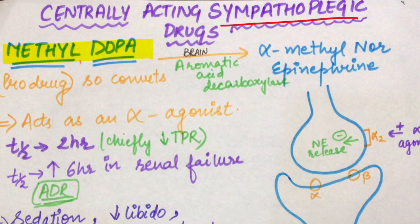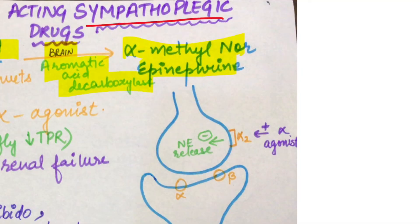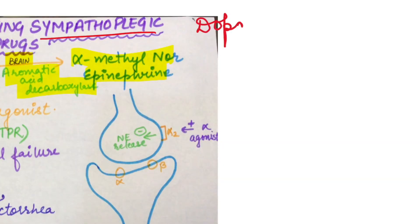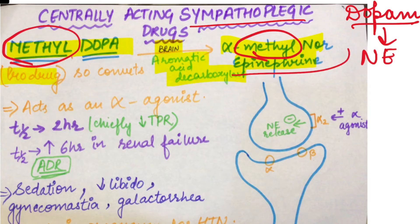Methyl dopa is a pro-drug, meaning we have to activate it into an active form in the brain. In the brain there is an enzyme called aromatic acid decarboxylase. This enzyme converts methyl dopa into alpha methyl norepinephrine. Normally, dopamine is converted into norepinephrine, but here methyl dopa is converted into methyl norepinephrine.